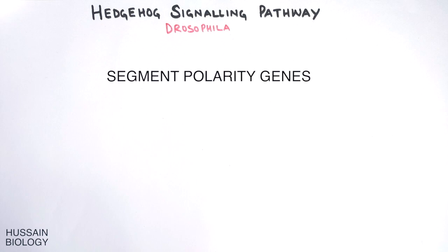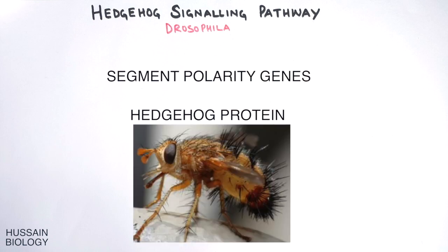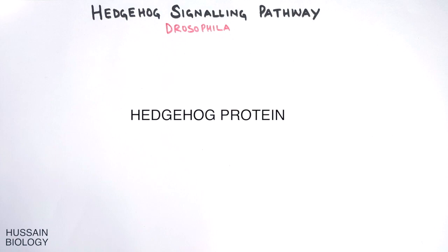In this pathway we have hedgehog protein that drives the pathway. It's called hedgehog because if mutation occurs in the hedgehog gene of Drosophila, the Drosophila grows spine-like structures as shown in the diagram that resemble the hedgehog. Now let's get straight to the pathway.